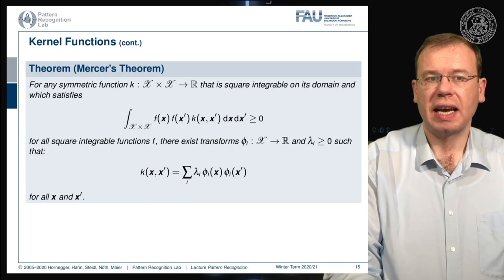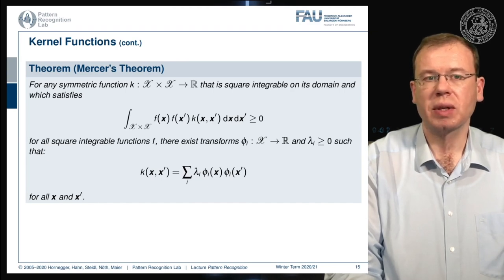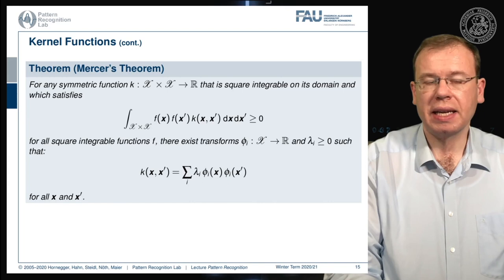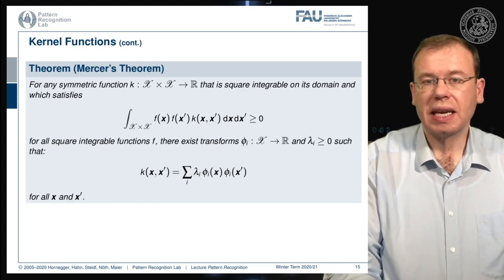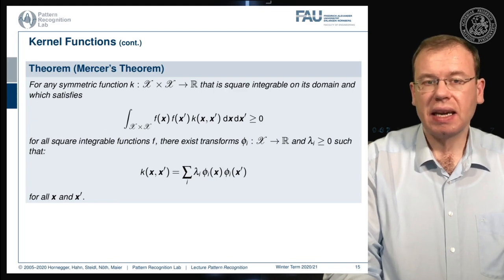There is Mercer's theorem, and Mercer's theorem tells us that any symmetric function that maps a feature space x times x, so this is a function with two variables, to a real space, and that is square integrable on its domain, and satisfies this integral here, the integral over the whole domain of f of x times f of x prime times the kernel of x and x prime over x and x prime is greater or equal to zero for all square integrable functions.